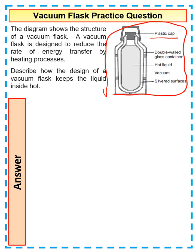So you've got a plastic cap, you've got the fact that it's glass, the fact that there's a vacuum in it, you've got a silver surface, stuff like that. So they tell you all of that on the diagram, so you'll have to remember to talk about that.